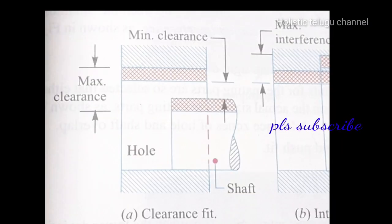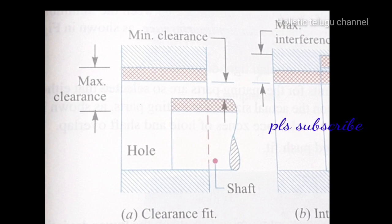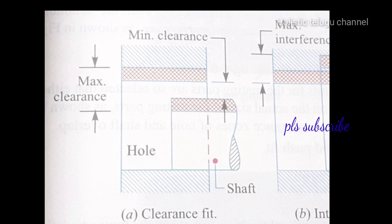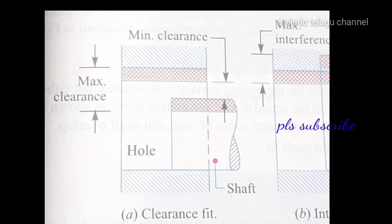The difference between the minimum size of the hole and the maximum size of the shaft is known as minimum clearance. The difference between the maximum size of the hole and the minimum size of the shaft is called maximum clearance. Examples of clearance fit include: slight fit, easy sliding fit, running fit, slack running fit, and loose running fit.